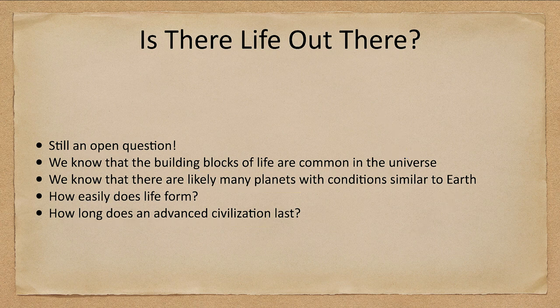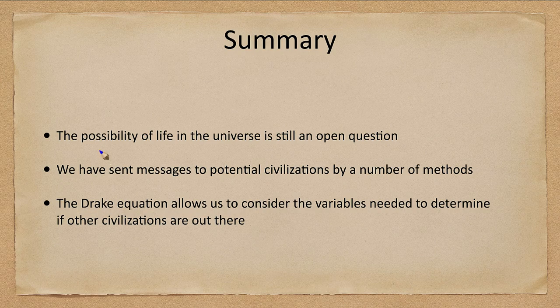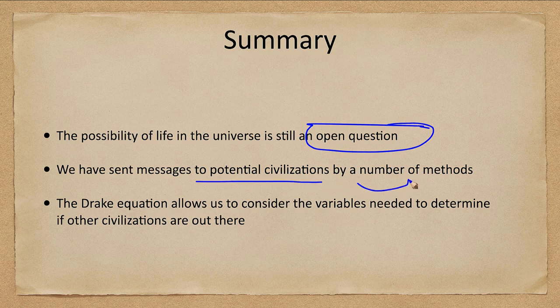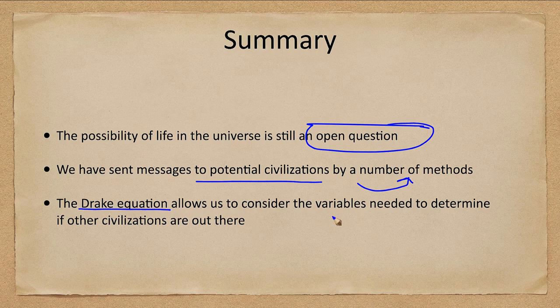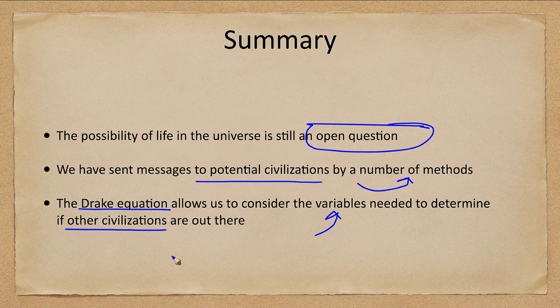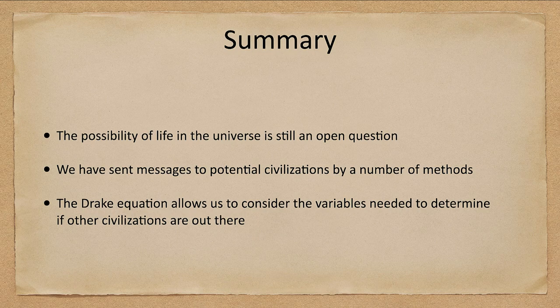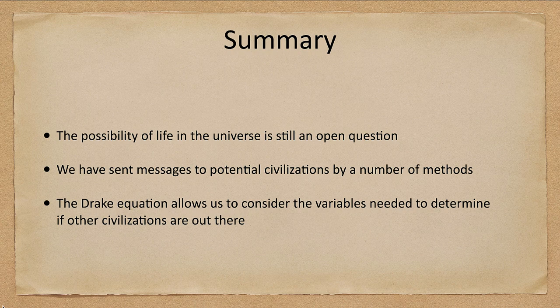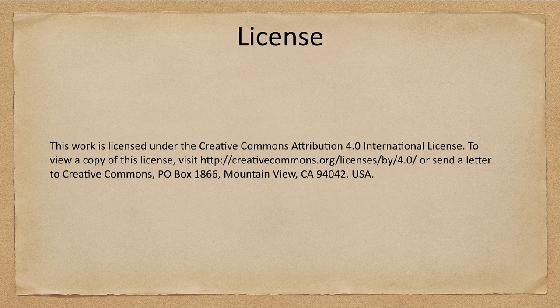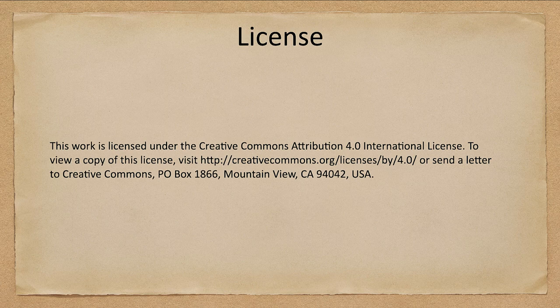So let's go ahead and finish up with our summary. What we looked at, the possibility of life in the universe is an open question. We have sent messages by a number of different methods to other civilizations. And we talked about the Drake equation, which allowed us to consider the variables needed to determine if and how many other civilizations are out there. So that concludes this lecture on the search for extraterrestrial intelligence. We'll be back again next time for another topic in astronomy. So until then, have a great day, everyone. And I will see you in class.